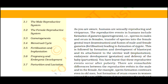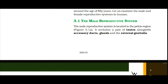There are remarkable differences between the reproductive events in the male and in the female. For example, sperm formation continues even in old men, but formation of ovum ceases in women around the age of 50 years. Let us examine the male and female reproductive systems in humans.